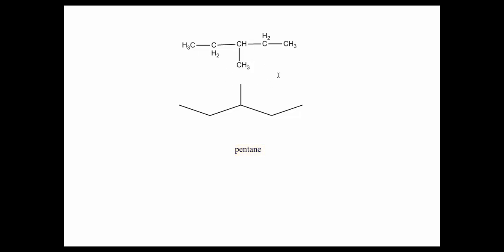The methyl branch is on carbon number three. Counting from the right end — one, two, three — or from the left end — one, two, three — gives the same number. So this compound is 3-methylpentane.